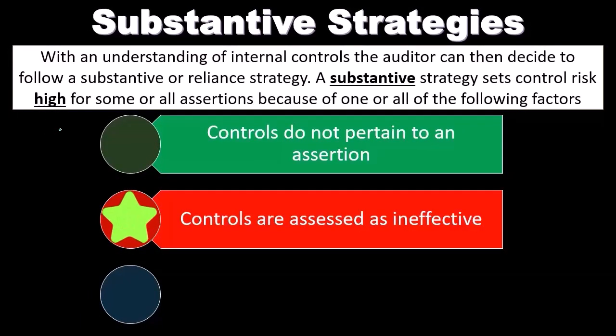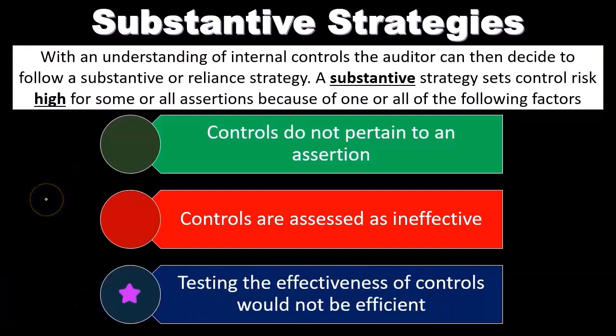Controls are assessed as ineffective — they might have internal controls that are put in place, but if they're not effective, or they're not effective for the particular assertion that we're trying to test for, then that's going to be a problem with the internal controls.